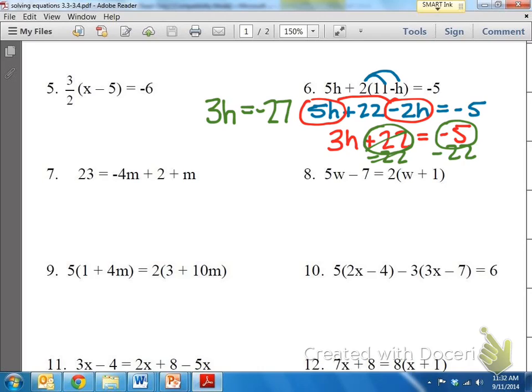Now, for our last step, you can see that to get H by itself, we need to divide by 3. And when we do that, the 3s will cancel, and H will equal negative 9, because negative 27 divided by positive 3 will be negative, and 27 divided by 3 equals 9. So H equals negative 9.